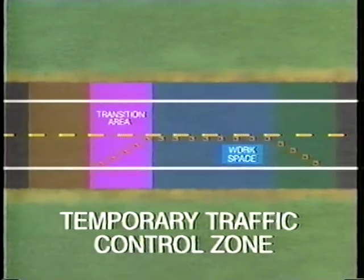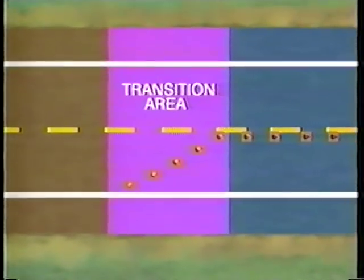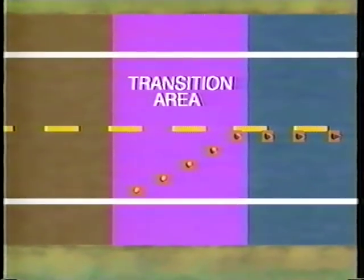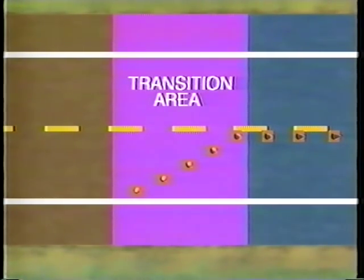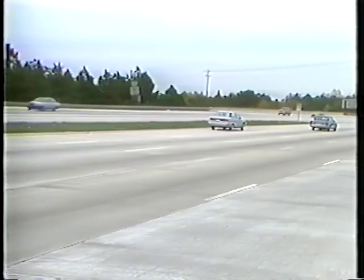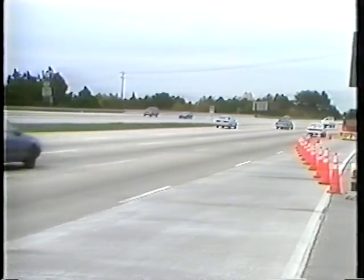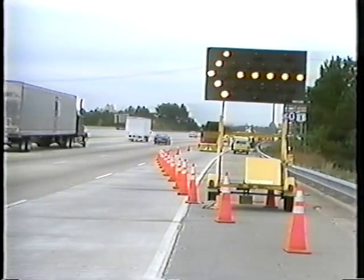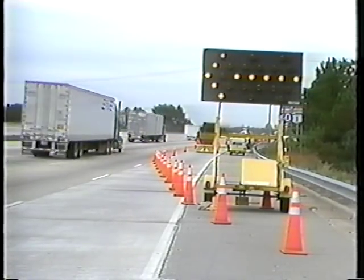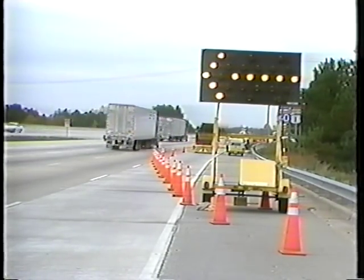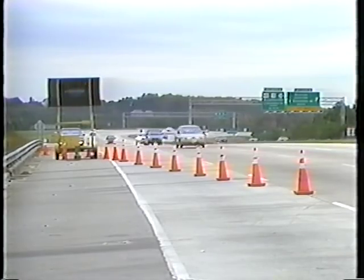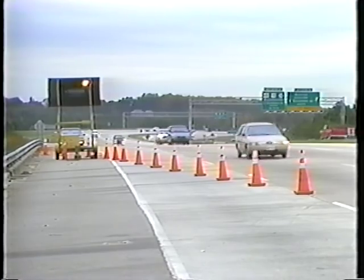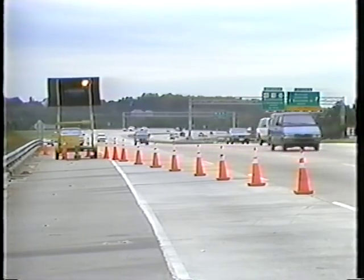Next is the transition area. When work is performed within one or more traveled lanes, a lane closure is generally required. In the transition area, traffic is channeled from the normal highway lanes to a new path, which is required to move traffic around the activity area. Most often, this is accomplished with tapers to close the lanes.